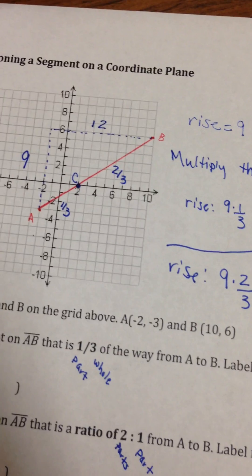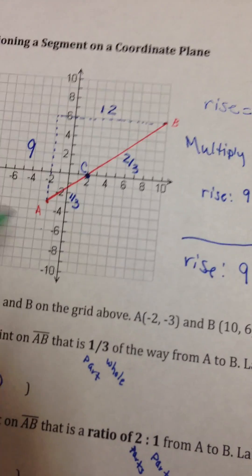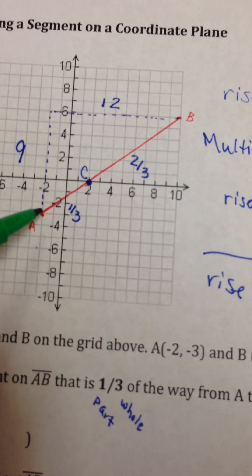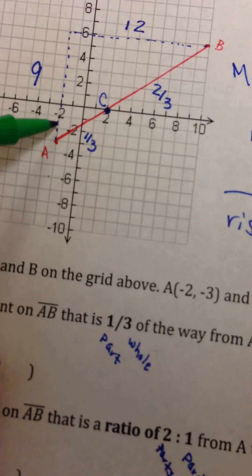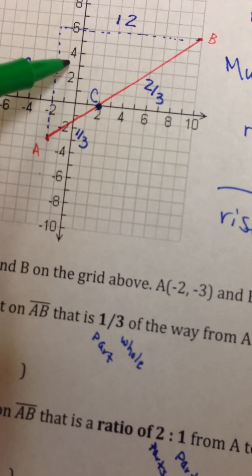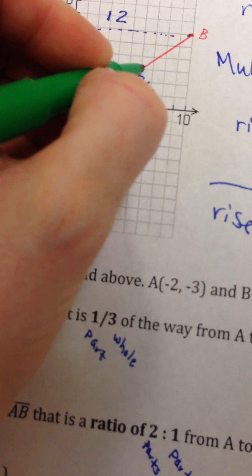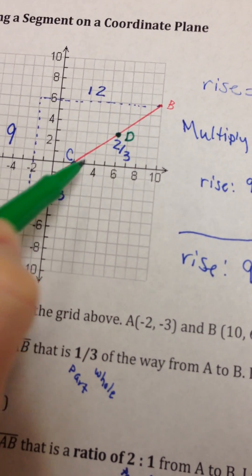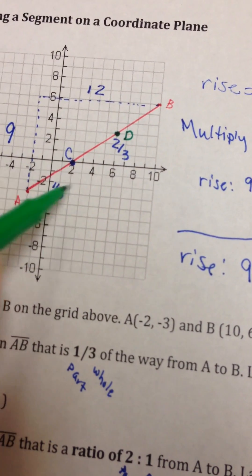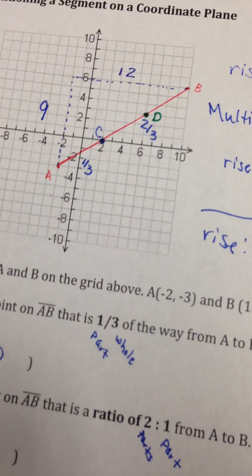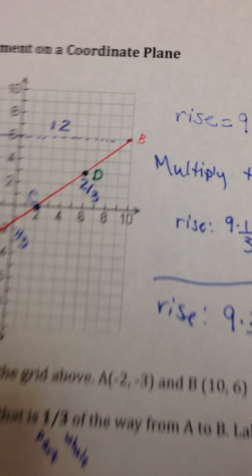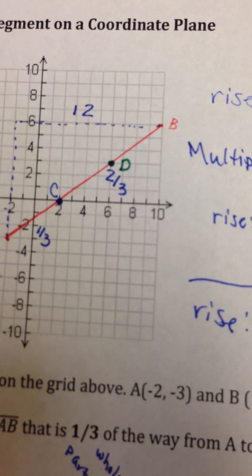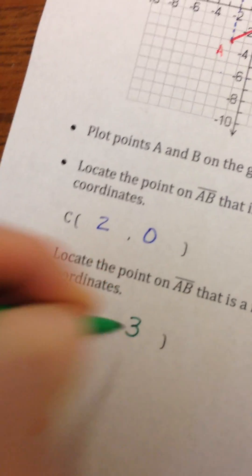Going over to our picture, it says to go from A to B. So from A, we rise six — three, four, five, six — and we run eight — one, two, three, four, five, six, seven, eight. It should land on the line if you do it correctly. Point D breaks the whole segment in the ratio of two to one: two pieces before it and one piece after it. The coordinates for point D are (6, 3).